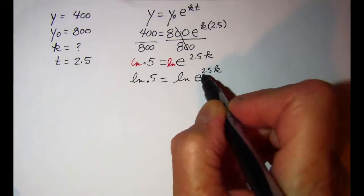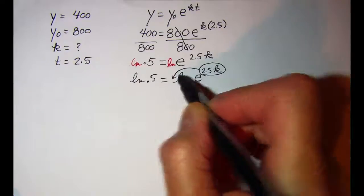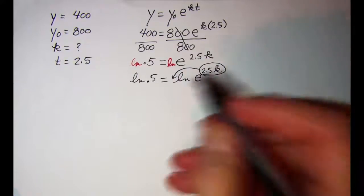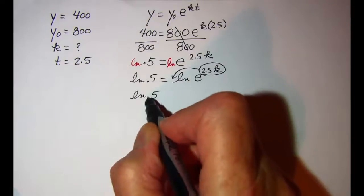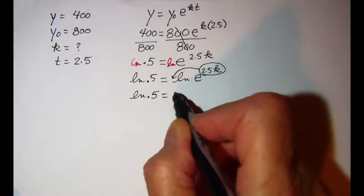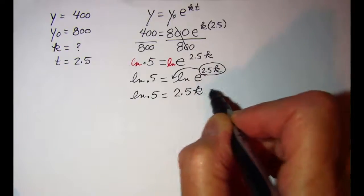Now we'll use the property of logarithms that says if we have an exponent on the argument of a logarithm we can take that exponent and write it as the coefficient in front of the logarithm. So ln 0.5 is equal to 2.5k times ln e.